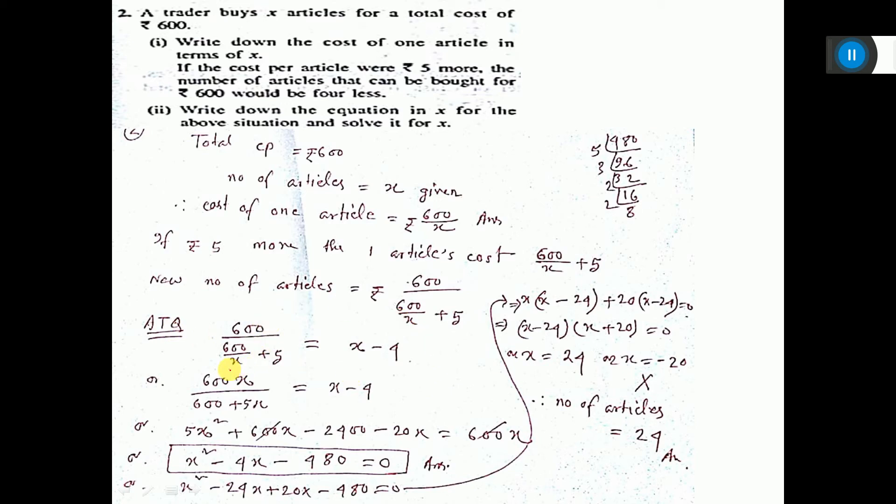Now solve. You can do LCM, x is the LCM, so 600 plus 5x I have written here. Now this x will go up, 600x here I have written. Then you do cross multiplication, this into this and this into one.